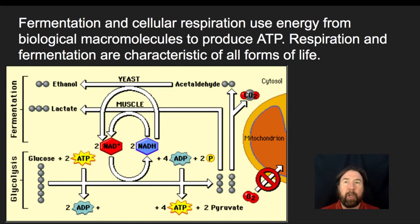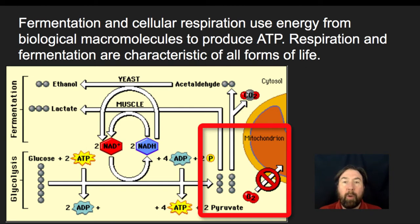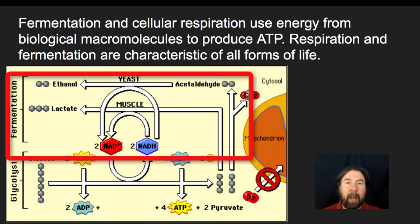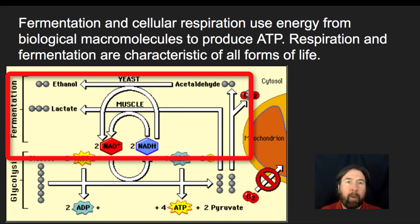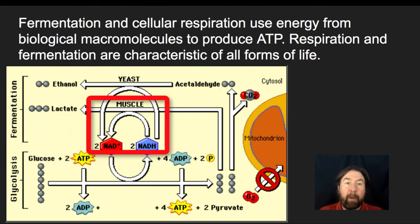Fermentation and cellular respiration use energy from biological molecules to produce ATP, and they are characteristics of all forms of life. Fermentation is when we've broken down our glucose and produced molecules of pyruvate, but cells can't utilize oxygen. Fermentation is synonymous with anaerobic cell respiration — it breaks down pyruvates into smaller carbon molecules, either ethanol or lactic acid, to produce two ATP. By undergoing fermentation, we recycle the NADHs produced through glycolysis back to NAD+ so we can continue glycolysis.